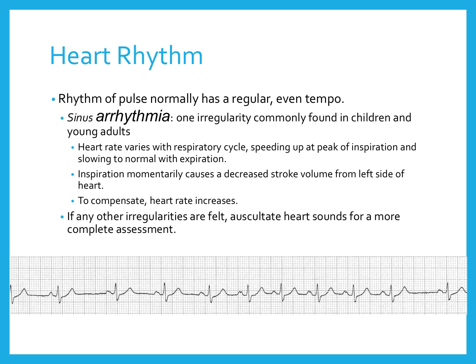A normal pulse rhythm is regular and even. An arrhythmia means the rhythm is irregular. Sinus arrhythmia can be found in children and young adults — heart rate varies with the respiratory cycle, speeding up at peak inspiration and slowing with expiration — but this doesn't mean something is wrong. If you feel an irregularity, you should listen to the heart sounds for a complete assessment.